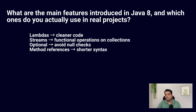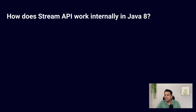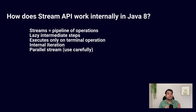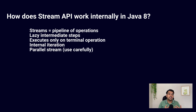The next question is: how does the Stream API work internally in Java? Streams don't store data — they work on top of collections. A stream pipeline has three steps: first the source, then intermediate operations, and then a terminal operation. Intermediate operations are lazy — they don't run until a terminal operation is called. We also have the parallel stream method, but you should be very careful while using parallel streams.